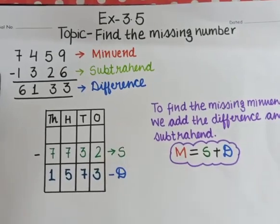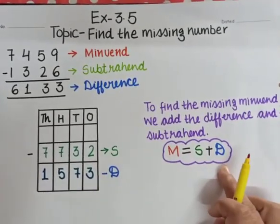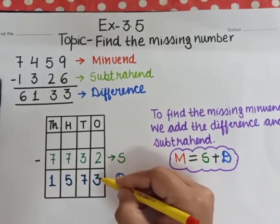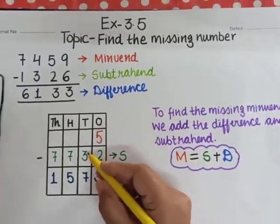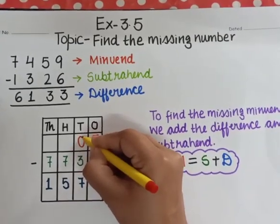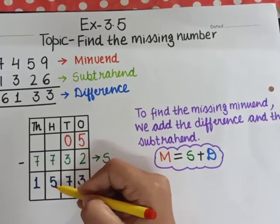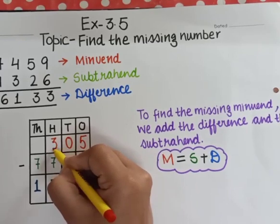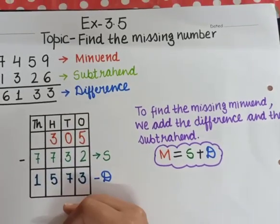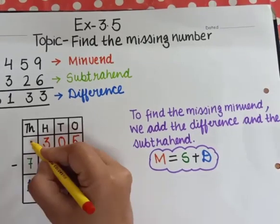So what we will do in this case, we will add both of the numbers according to our formula. It's 2 plus 3 is equal to 5. 7 plus 3 is equal to 10. 1 has gone for borrow. 7 plus 5 is equal to 12, plus 1 is 13. I have added the borrow as well. And 1 again borrow. 7 plus 1 is 8, plus 1 is equal to 9.